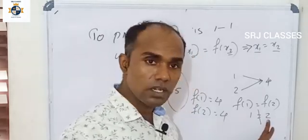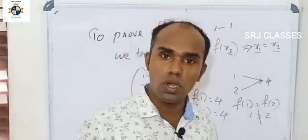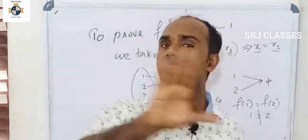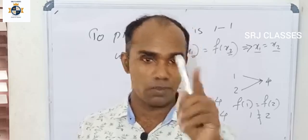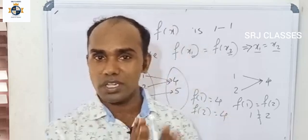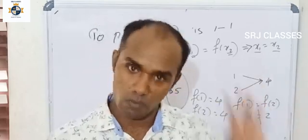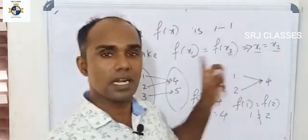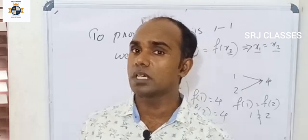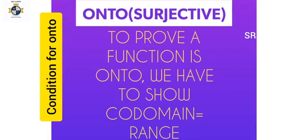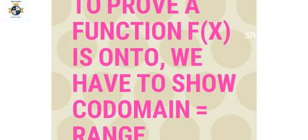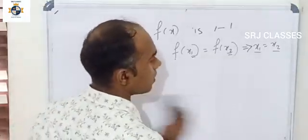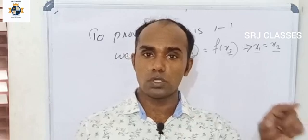While checking this condition: f(x1) = f(x2) implies x1 = x2. This is the one-to-one condition. The second condition is codomain equal to range.